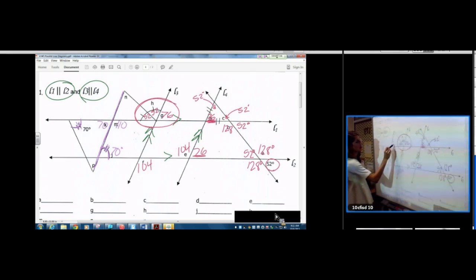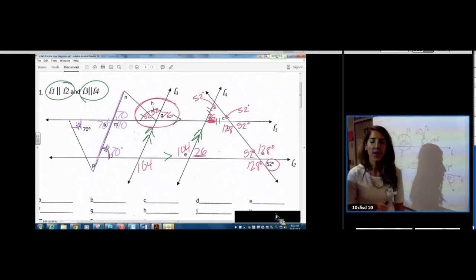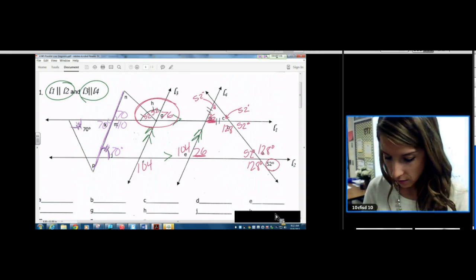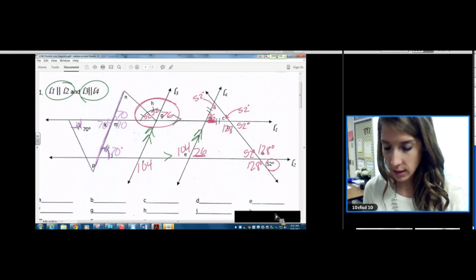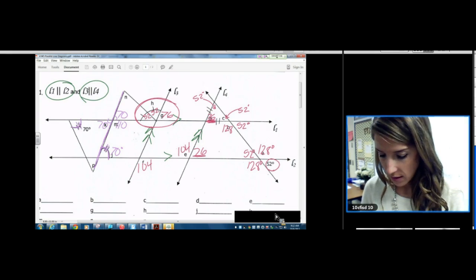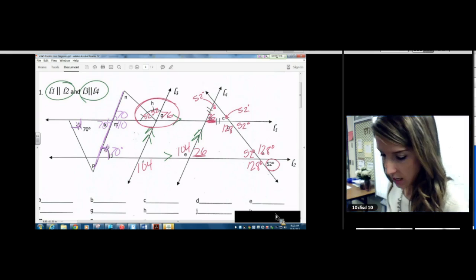Then we can do 70 here. Vertical angles. And then to find n, you need to use a triangle. A triangle has 180 degrees. So 180 minus 70 minus 52. And n is 58.